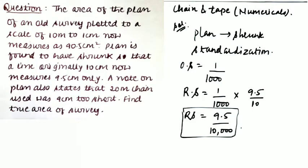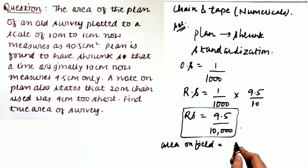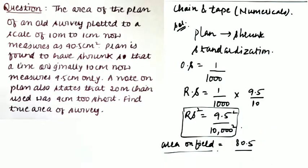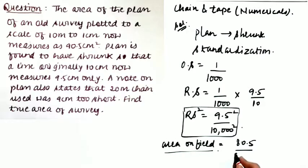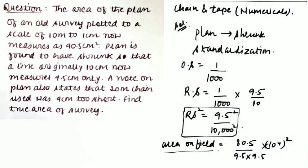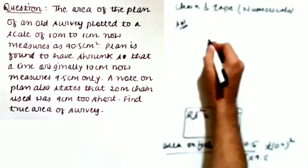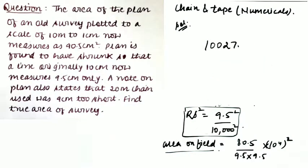The present area is given as 90.5 centimeter square. To calculate the area on the field, you divide 90.5 by the square of RS — because it is related to area. If it were a length you would divide by RS, but for area you divide by RS squared: 9.5 × 9.5 over 10 to the power 4 squared. Converting to meter square, the area on ground comes out to be 10,027.70 meter square.